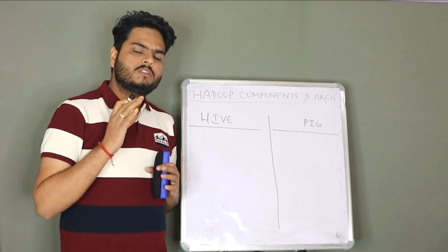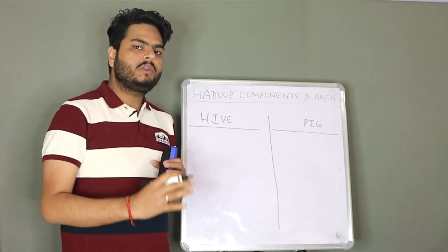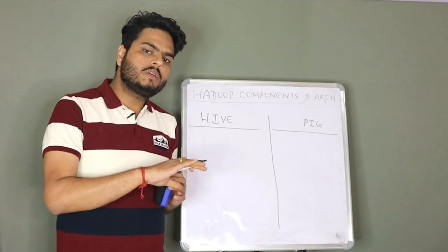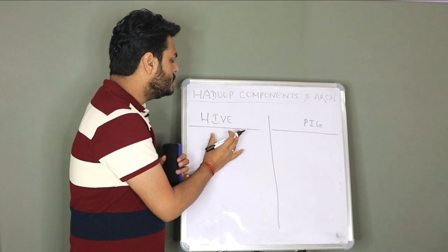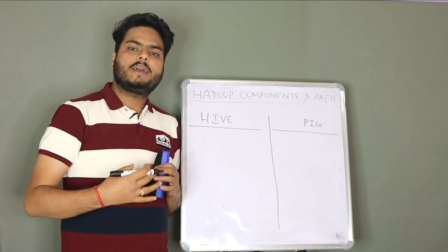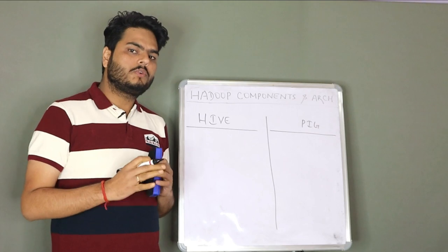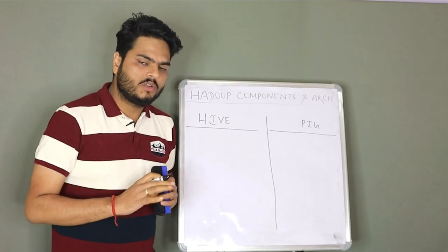In my last video, I had explained what is HDFS, MapReduce and Yarn from data storage and processing point of view. In this video, these two tools are used for data access and Uzi and Zookeeper is used for data management point of view.